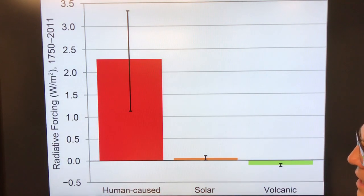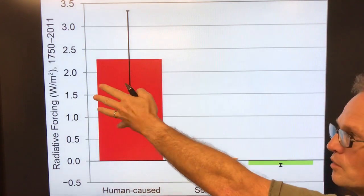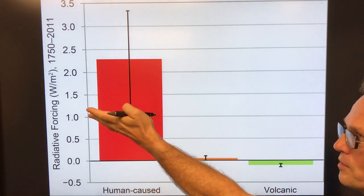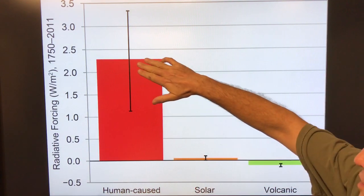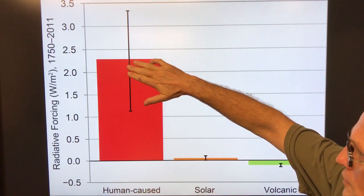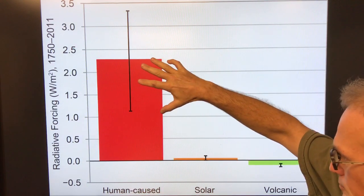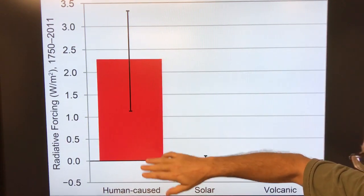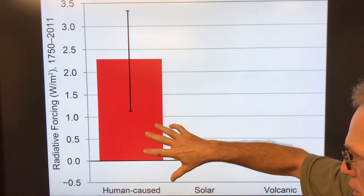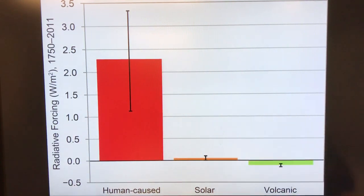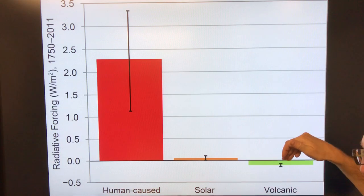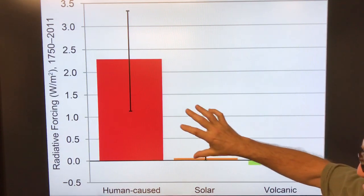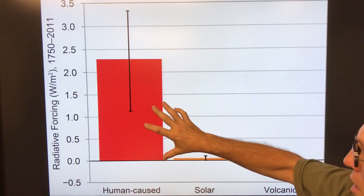This is the radiative forcing from 1750 — which we consider the beginning of the Industrial Revolution — to 2011. Human-caused forcing is roughly 2.25 watts per square meter. This is the greenhouse gas and human-caused forcing, also landscape changes. The forcing from solar changes is negligible, and volcanic changes are slightly negative. We are completely dwarfed by the human-caused forcing — that is the key thing.